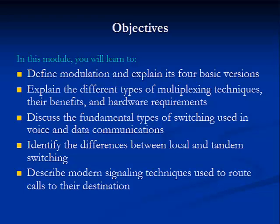After reviewing this telecom module on signaling and switching, you will be able to first define modulation and explain its four basic versions, including amplitude modulation, frequency modulation, phase modulation, and pulse code modulation. Then you will be able to explain the different types of multiplexing techniques, their benefits, and the hardware requirements. You will be able to discuss the fundamental types of switches used in voice and data communications, identify the differences between local and tandem switching, and finally describe modern signaling techniques used to route calls to their destination, as well as looking at the combined collection of hardware and software that establishes connections between lines and trunks in order to complete telephone calls.